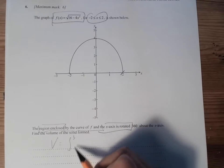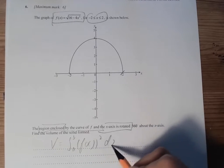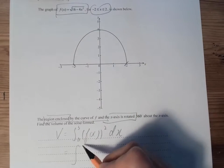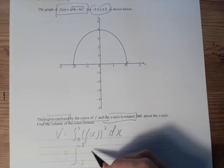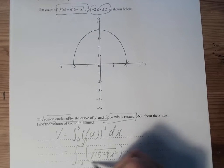With the formula, we have π times the integral from a to b of f(x) squared dx. We substitute what's given within these two curves. So it's from -2 to 2, and we have square root of 16 minus 4x squared, squared dx.